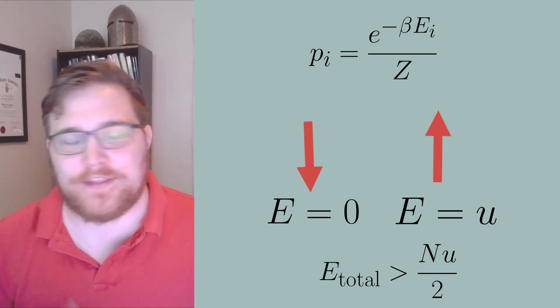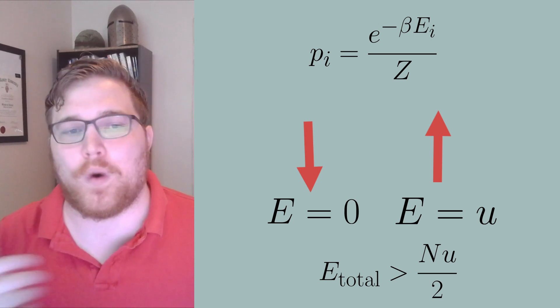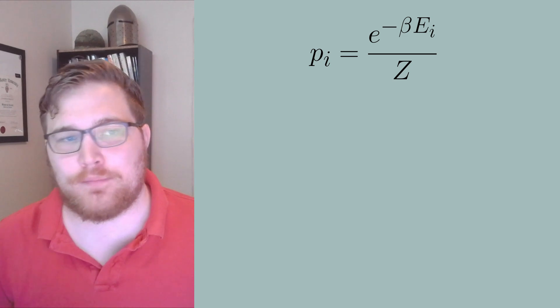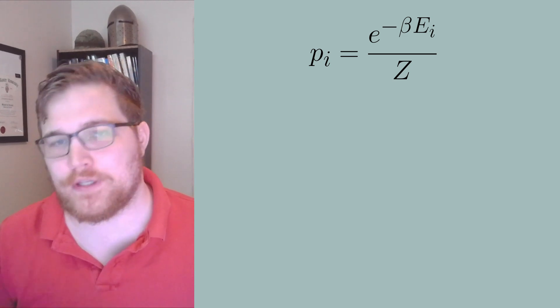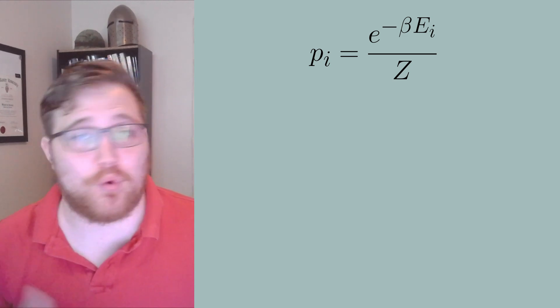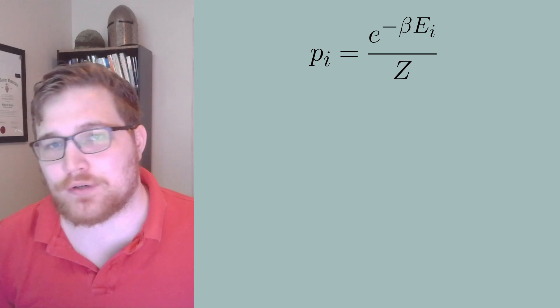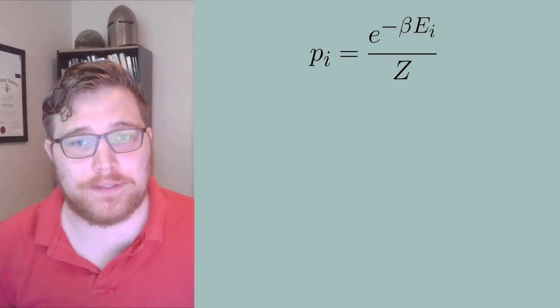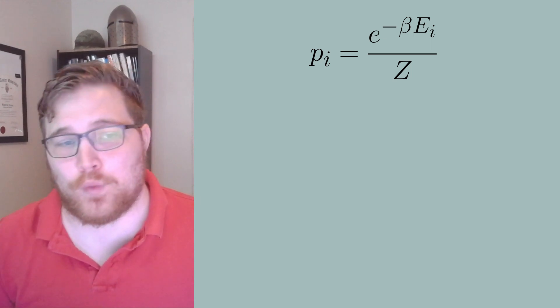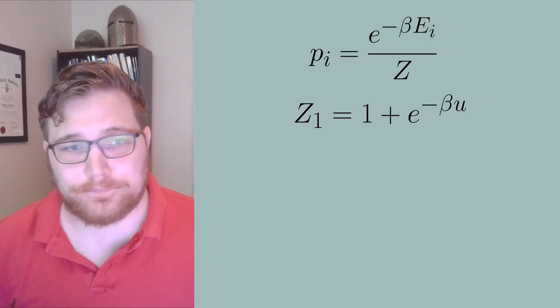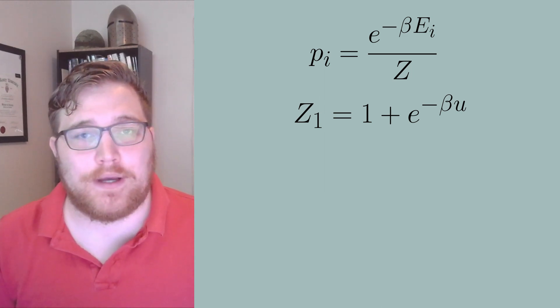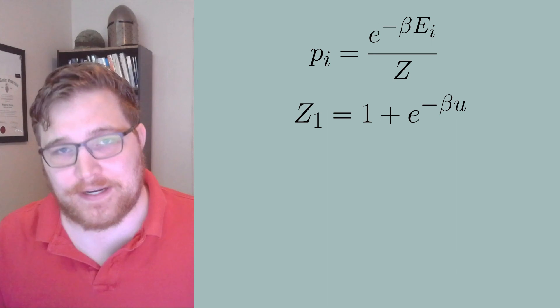So let's briefly demonstrate that the canonical ensemble requires a negative temperature in this context. For the spin system, we have two possible states for each individual spin, either up or down. Since the system is non-interacting, we can complete this analysis by only considering one spin. The partition function for one spin is given by the following equation. Then the total energy for our one spin is given by the next equation.